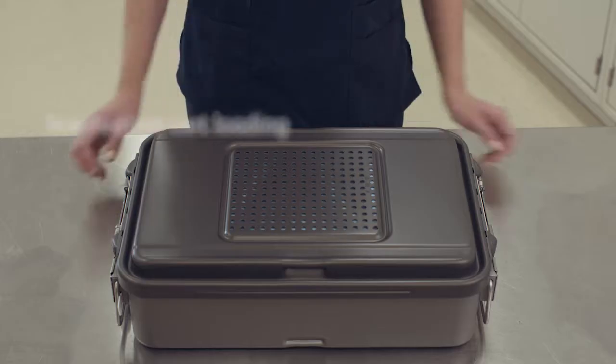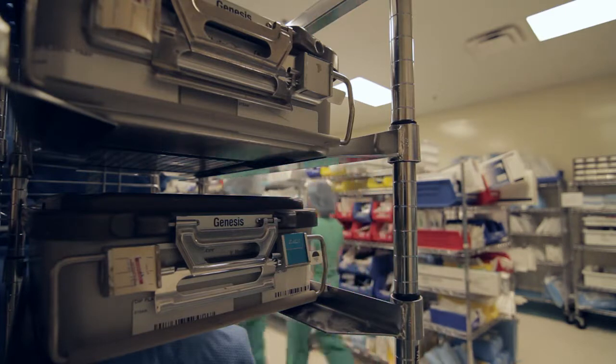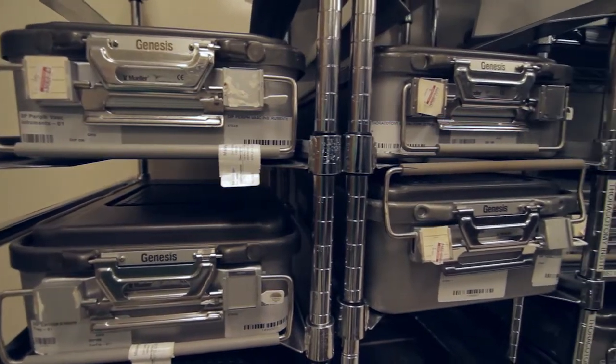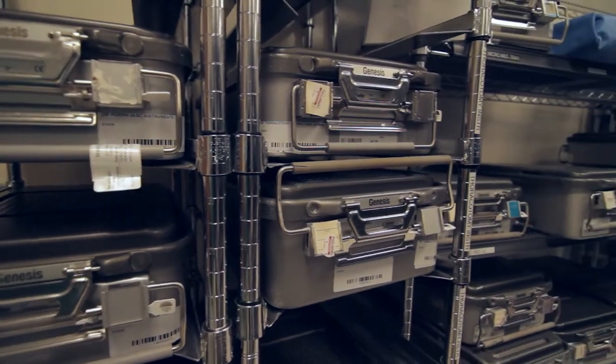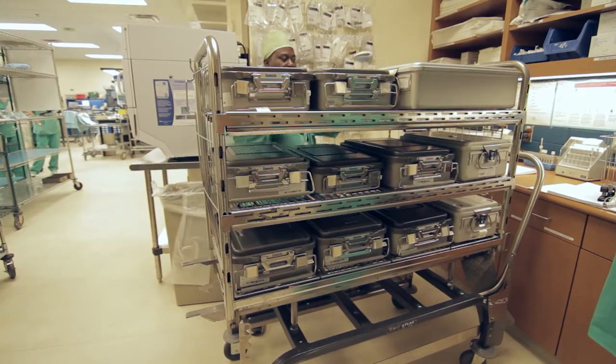When loading containers onto carts, always place the containers flat on cart shelves. Containers may be sterilized in dedicated loads or in mixed loads with wrapped and other peel-packed items. If sterilizing a mixed load, place containers below absorbent wrapped items.